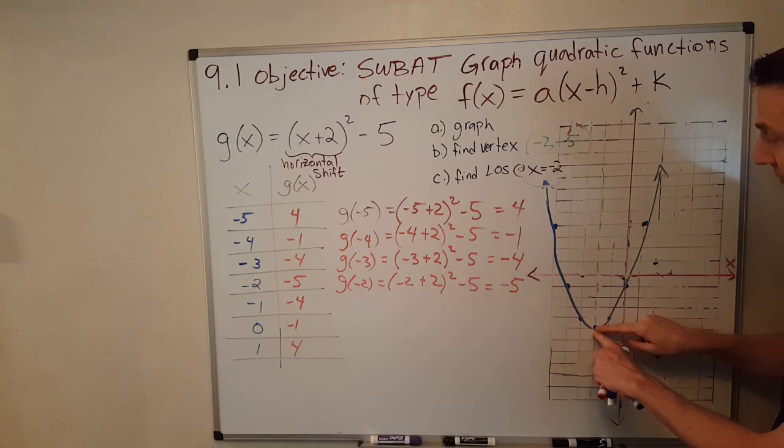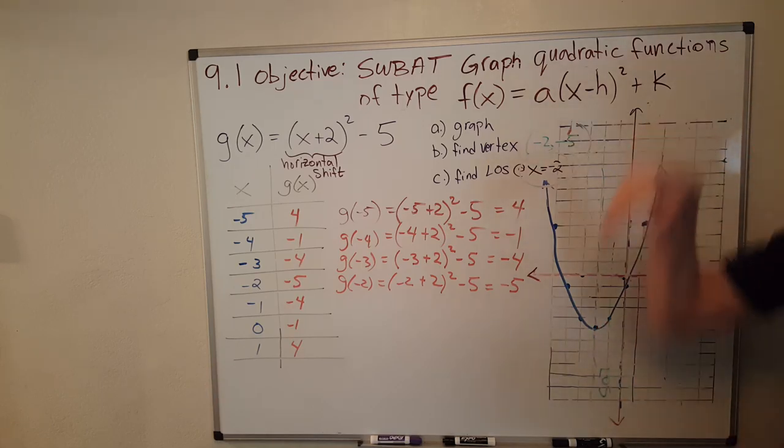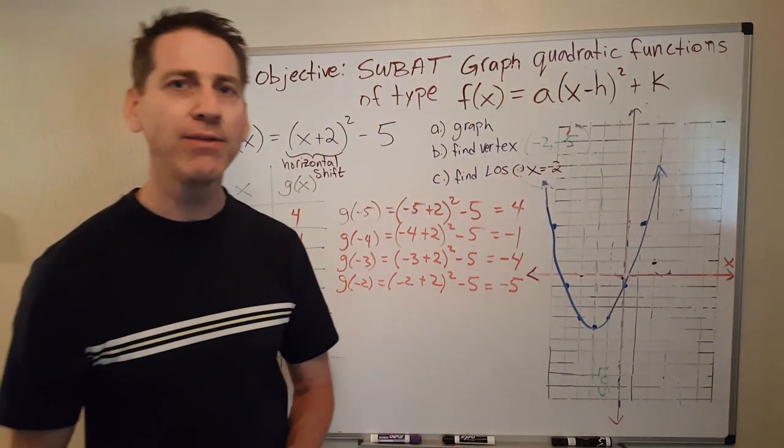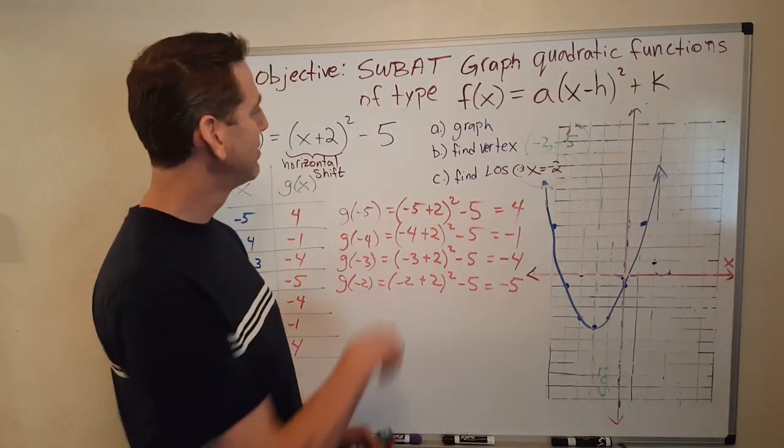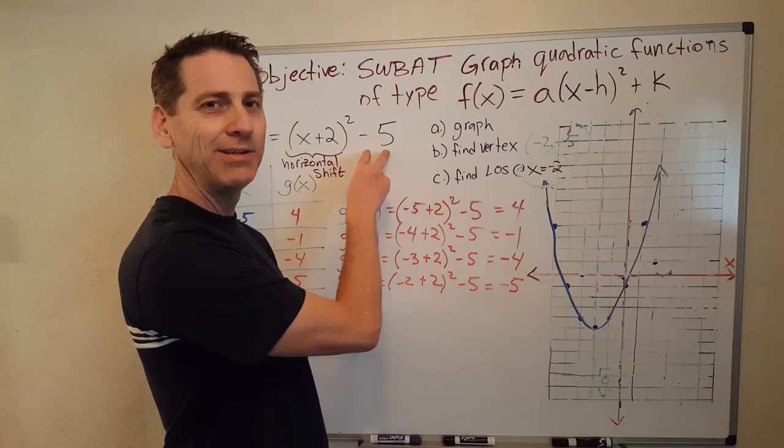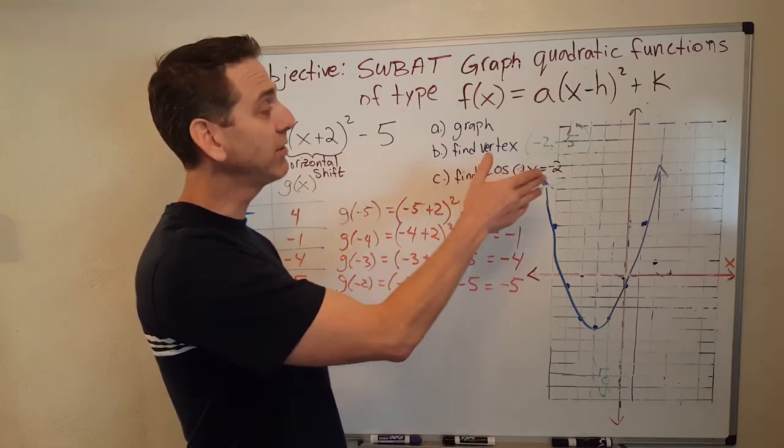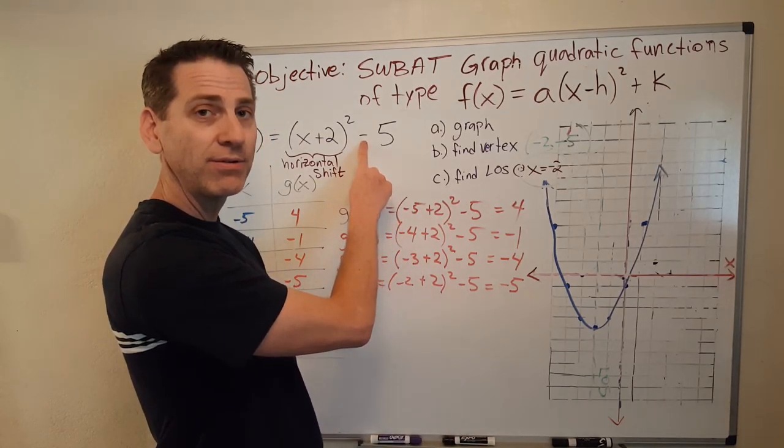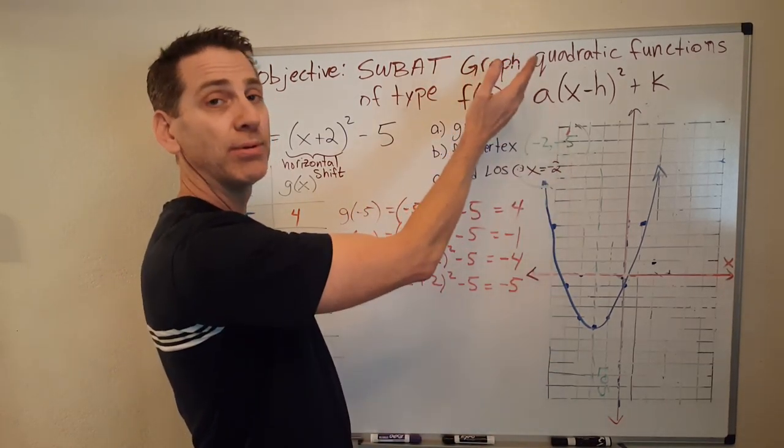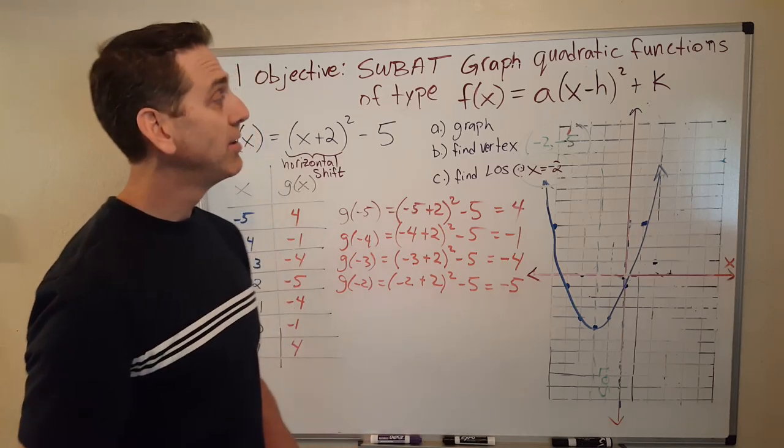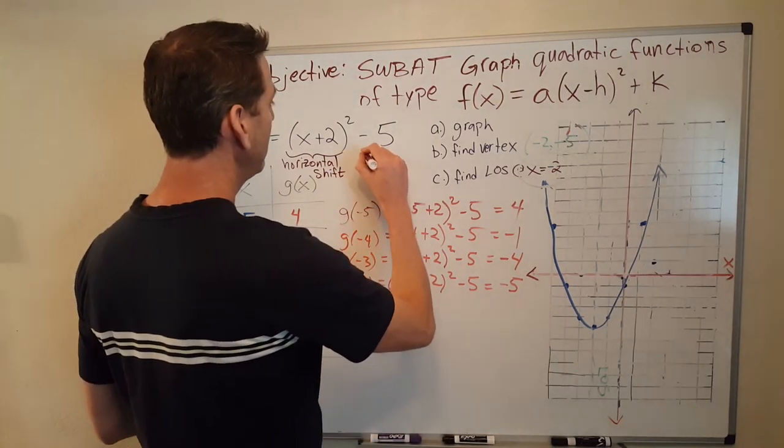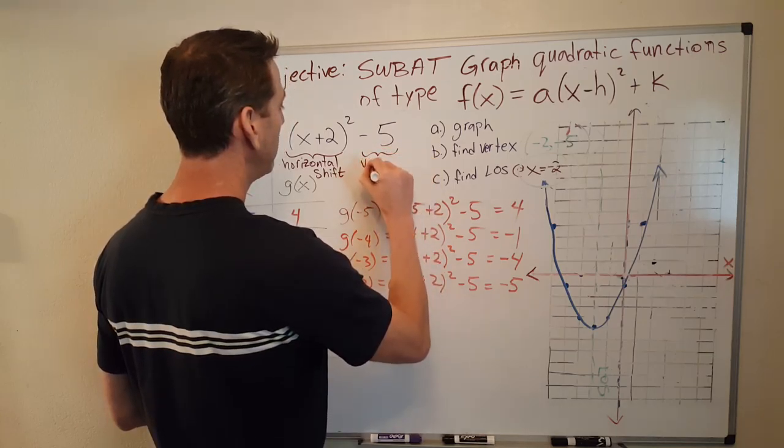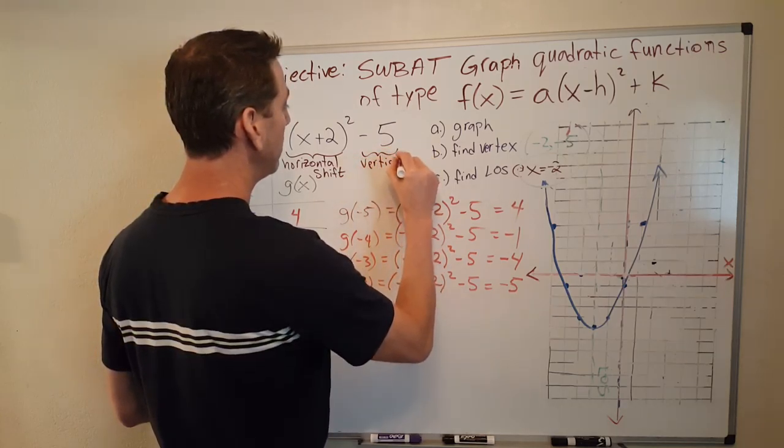But now look. The vertex actually shifted down vertically. 1, 2, 3, 4, 5. It went down 5. Where did we get that down 5 from? Right there. Negative 5 caused our parabola to shift down 5. If that would have been a plus 5, it would have shifted up. Okay. So this right here represents our vertical shift. Okay.